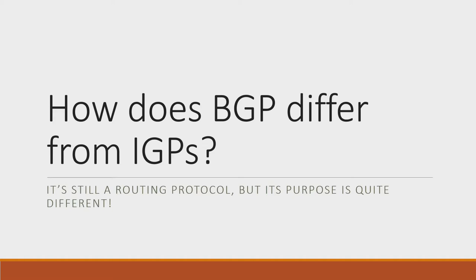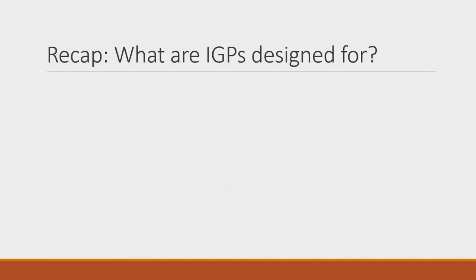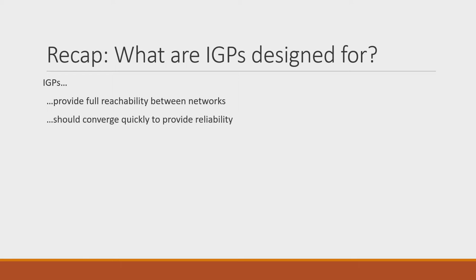If you've read about routing protocols, you've likely gotten the impression that BGP is special for some reason. BGP was designed with different goals in mind than the other routing protocols you've likely seen so far. Let's review what IGPs are used for. For the most part, IGPs are designed to provide full and dynamic reachability between networks. Routers usually discover each other automatically, and the end goal is full reachability between all networks. IGPs typically heal from network outages quickly, as any disruption in reachability would impact many end hosts.